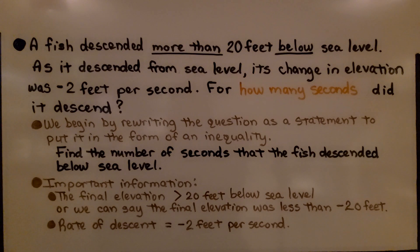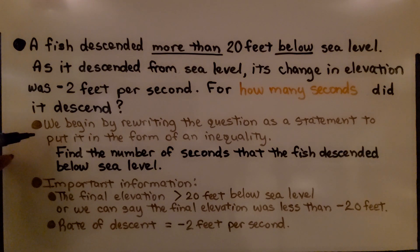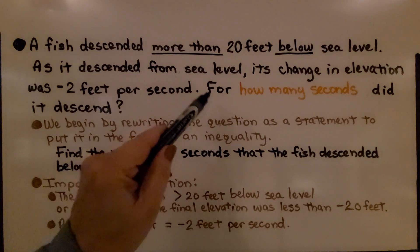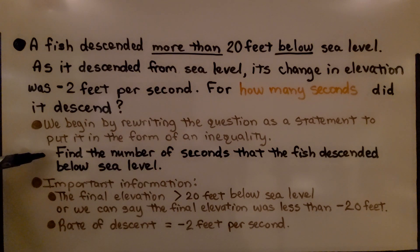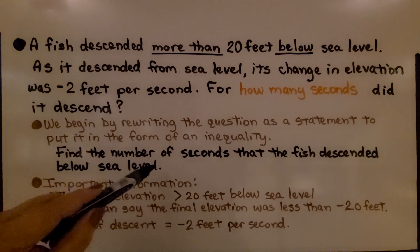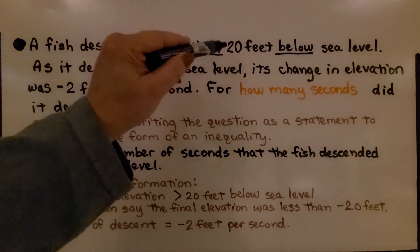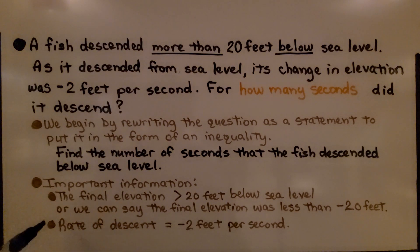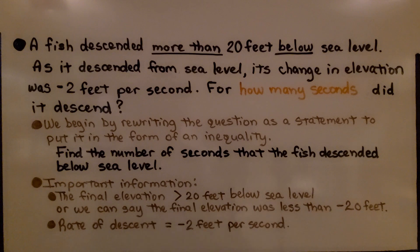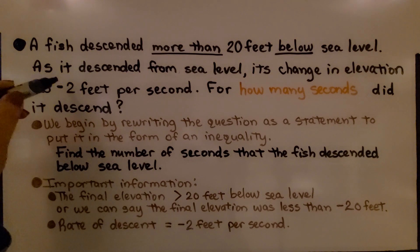A fish descended more than 20 feet below sea level. As it descended from sea level, its change in elevation was negative two feet per second. For how many seconds did it descend? We begin by rewriting the question as a statement: find the number of seconds that the fish descended below sea level. Our important information is that the final elevation is greater than 20 feet below sea level — or less than negative 20 feet — and the rate of descent was negative 2 feet per second.